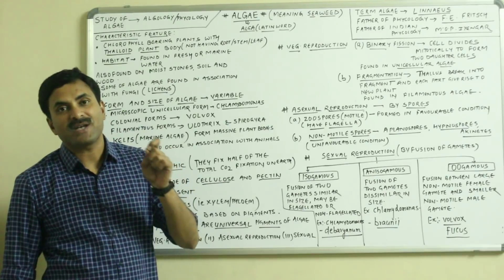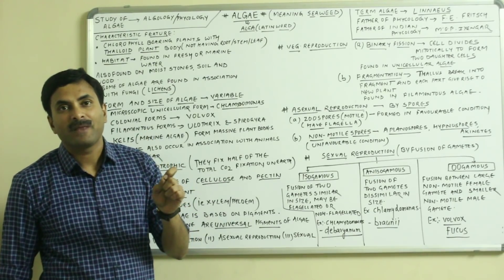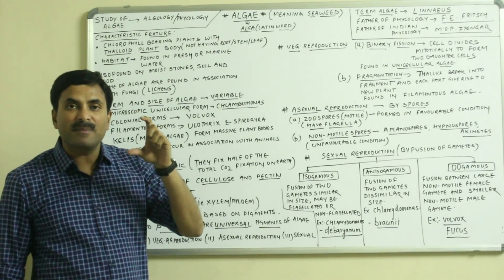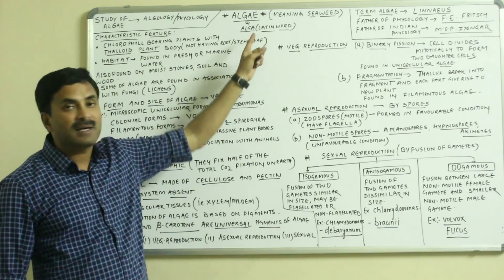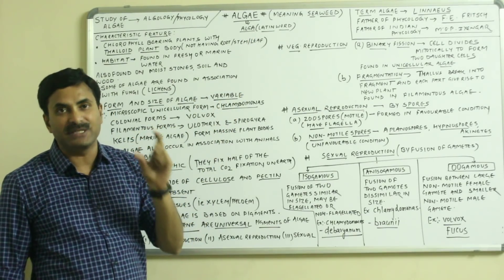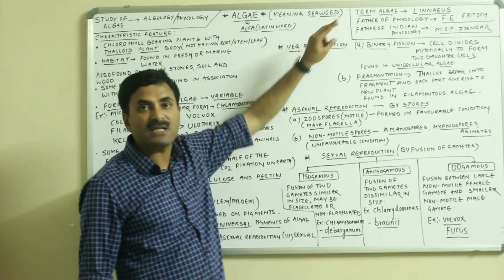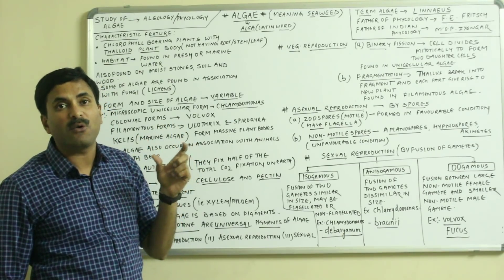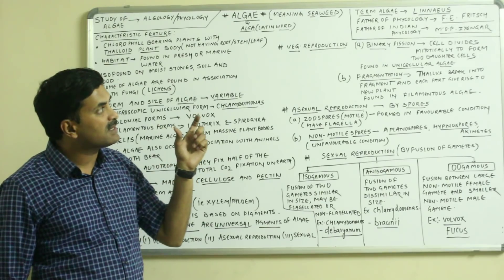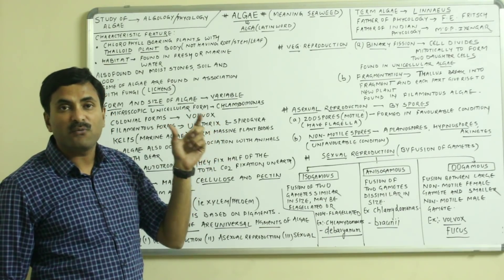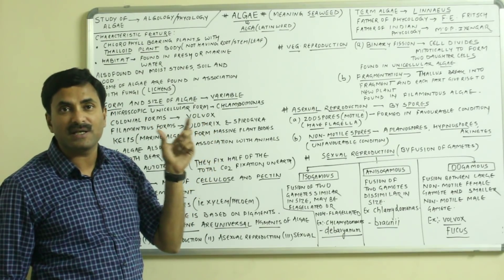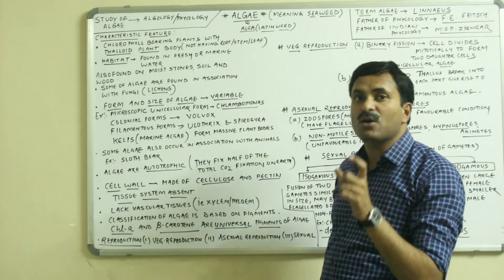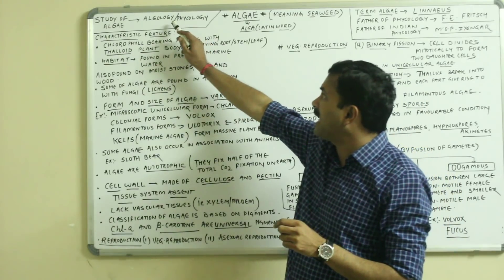Hello to all. Today we are starting with a topic known as the plant kingdom, and in plant kingdom we are discussing today about the algae. The word algae is actually coming from a Latin word 'alga' and the meaning of alga is the seaweed. This term algae was first of all given by Linnaeus. The father of phycology or algology is called F.E. Fritsch, and the father of Indian phycology is M.O.P. Iyengar. The study of algae is called algology or phycology.